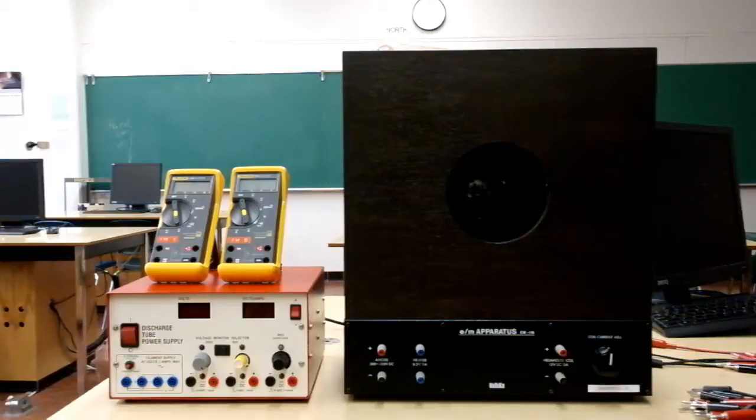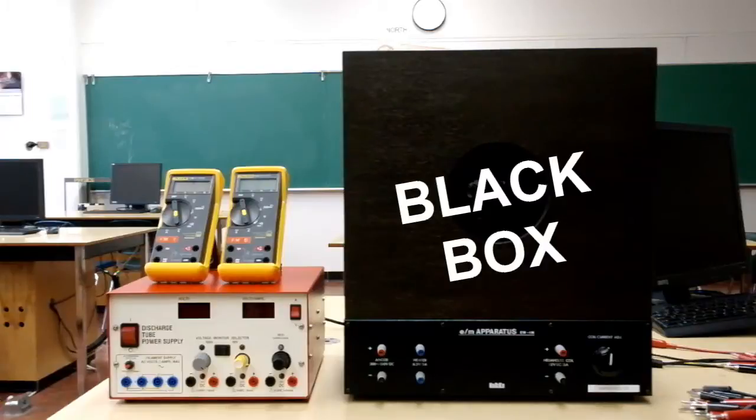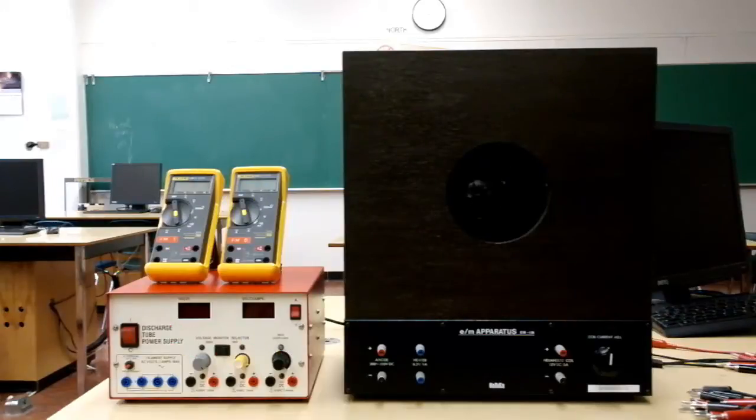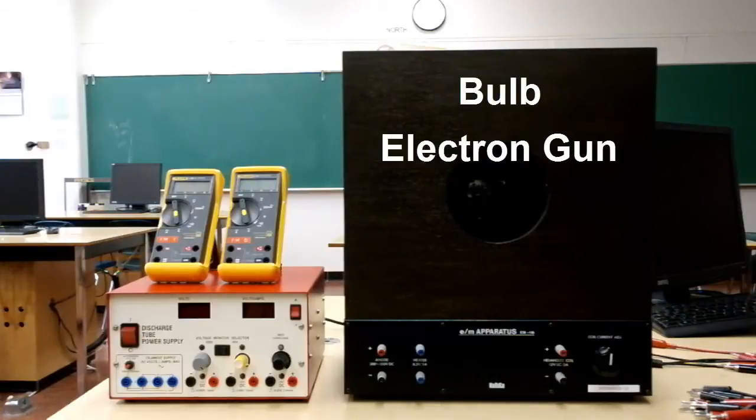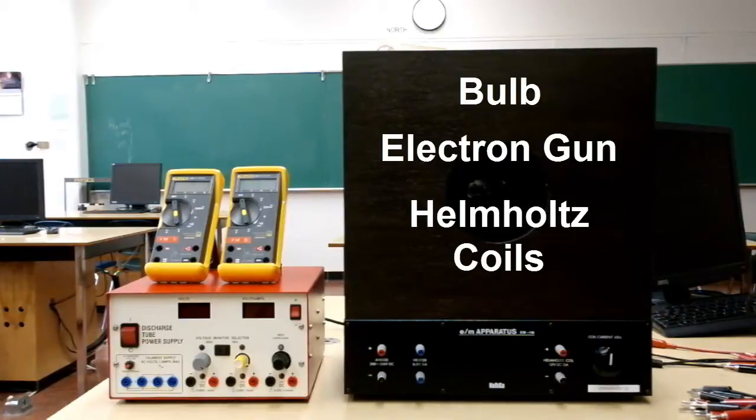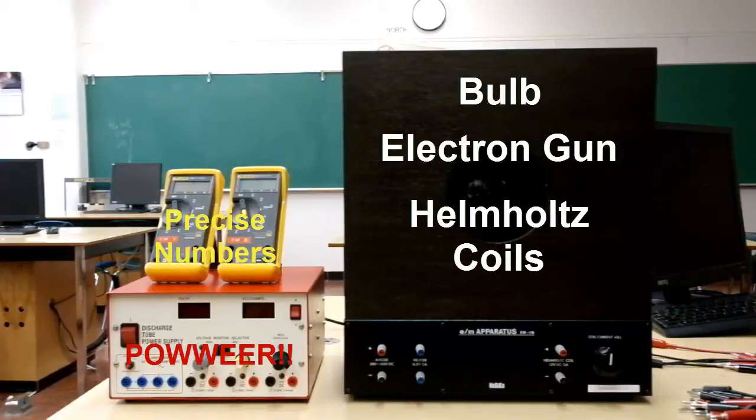The E over M apparatus here consists of these four things: the black box, the red box, and a couple multimeters. The black box there houses the bulb as well as the electron gun and the Helmholtz coil, which produce the magnetic field. The power supply supplies the power, and we're using the multimeter to get better readings of the voltage and current.